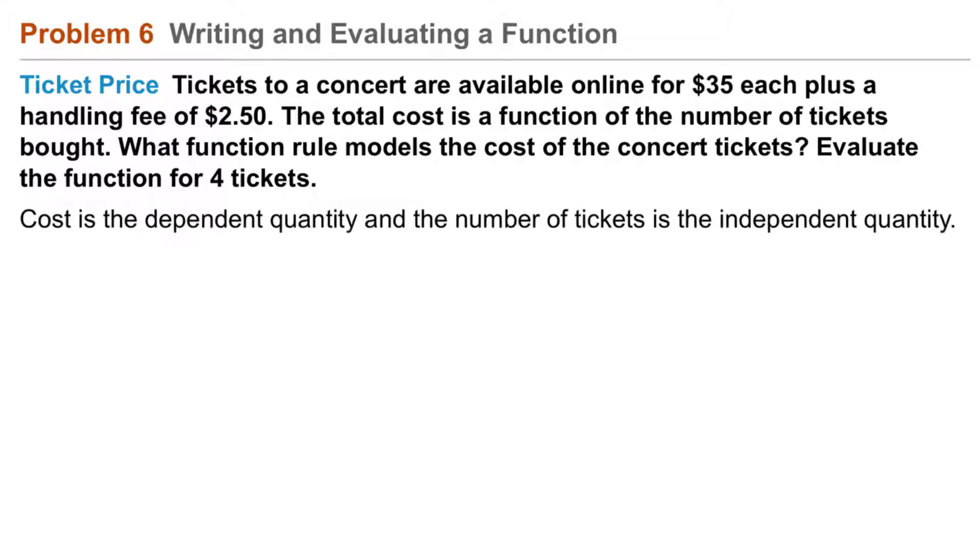Cost is the dependent quantity, and the number of tickets is the independent quantity, because we can say the cost depends on the number of tickets purchased. So we relate as follows. Total cost is cost per ticket times number of tickets bought, plus the handling fee.